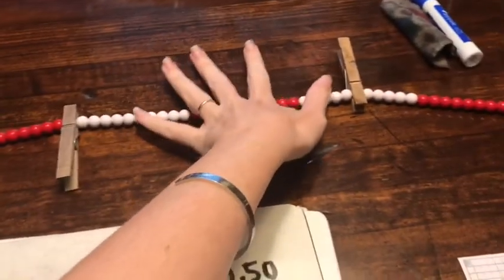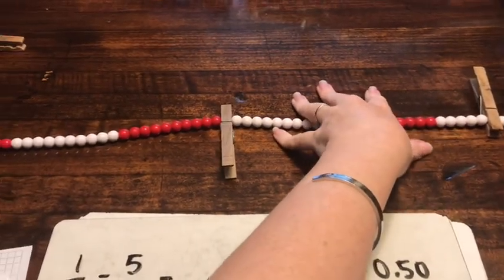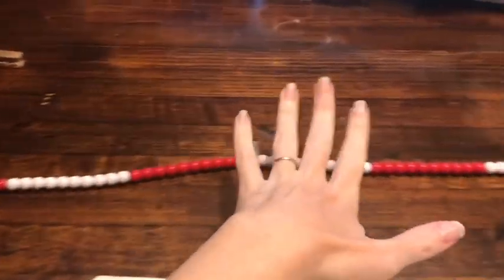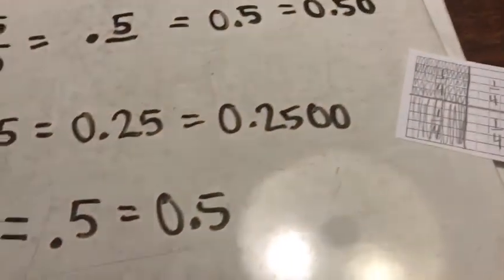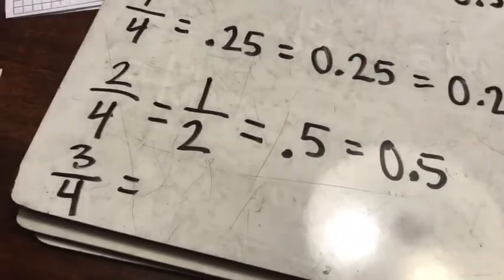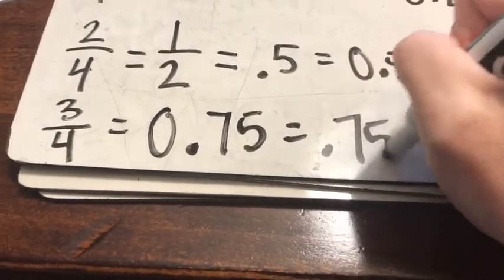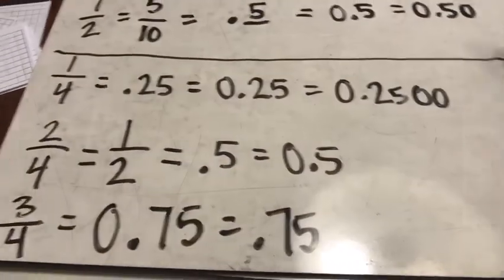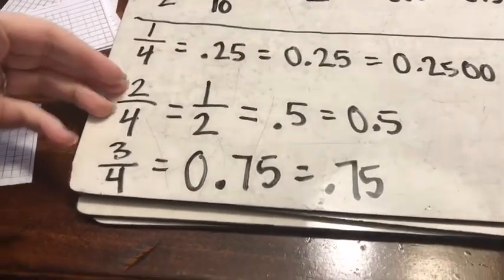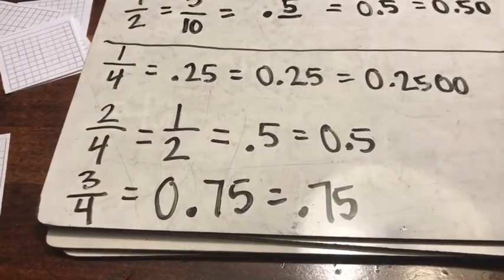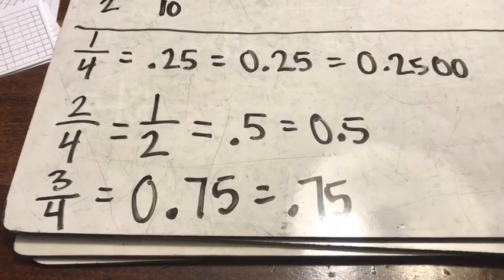If one fourth is twenty-five hundredths and another fourth is twenty-five hundredths, what is twenty-five plus twenty-five plus twenty-five? A lot of students know from counting money that's seventy-five cents — or they can count by tens: ten, twenty, thirty, forty, fifty, sixty, seventy, and five more is seventy-five. So three fourths equals seventy-five hundredths. It's not just about finding the equivalent for one fourth — it's about finding decimal equivalents for all the fourths.